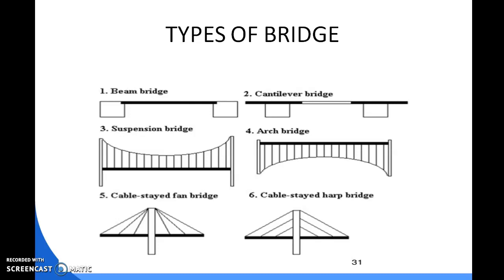An arch bridge has abutments at each end which hold the weight of the bridge. Arch bridges are one of the oldest bridge structures, built since ancient Greece. Tied arch bridges also have an arch-shaped superstructure, but their arches are above the level of the bridge deck and hold its form above. The bridge deck is supported by the top surface of the arch.